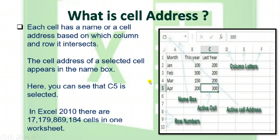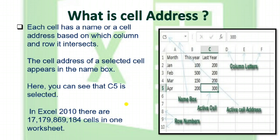The cell address of a selected cell appears in the Name Box. Whichever cell you select, it will show that address in the Name Box. Here, C5 cell is selected. In Excel 2010, there are 17,179,869,184 cells in one worksheet — that is the total number of cells in one worksheet. This is the number of columns and cells available in a worksheet of Excel 2010.